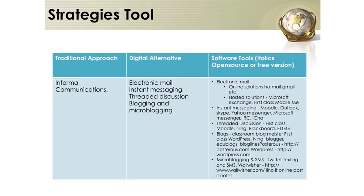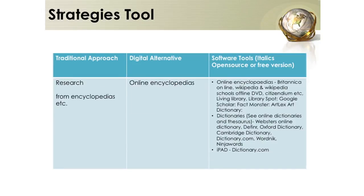If the activity is about informal communications, the alternative is using electronic mail, instant messaging, or threaded discussion. Tools include Gmail, Hotmail, FirstClass, MobileMe, instant messaging, Moodle, Outlook, Skype, iChat, Ning, WordPress, Blogger, and EduBlogs, as well as Wallwisher and Twitter. If the activity is about research using encyclopedias, the digital alternative includes online encyclopedias such as Britannica Online, Wikipedia, and Wikipedia Schools Offline, as well as Citizen Doom and the Living Library.